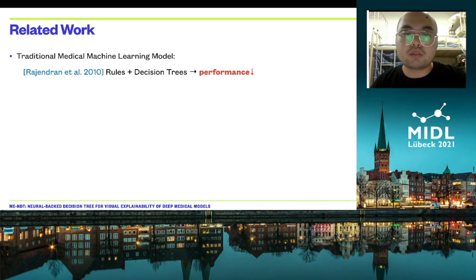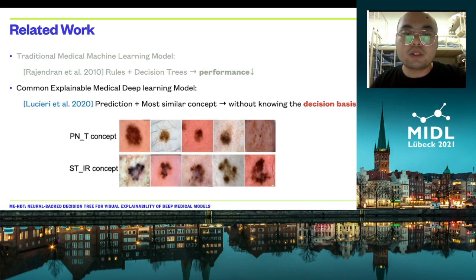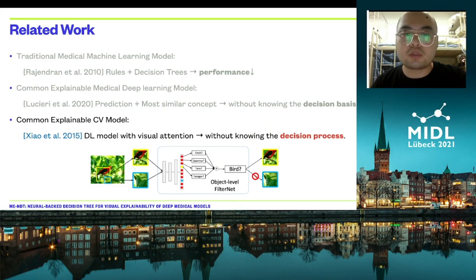But the performance is not often as good as that from deep learning models. Common interpretability medical deep learning models, such as work from TCAV, can output predictions based on similar concepts, but do not offer interpretability about the decision basis. Other standard explainable CV models indeed offer visualization, typically by using attention mechanisms, but we do not know the decision process.